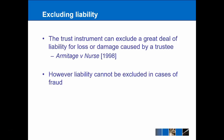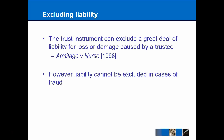Finally, it's important to mention the possibility of excluding liability. The trust instrument itself can exclude a great deal of liability for loss or damage caused by the trustee. Under Armitage v Nurse 1998, as long as liability is excluded within the trust instrument, the trustee will avoid liability for negligence, loss, and damages. However, if a loss is caused by fraud, that cannot be excluded in terms of liability.